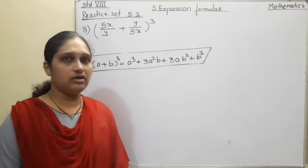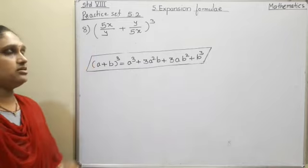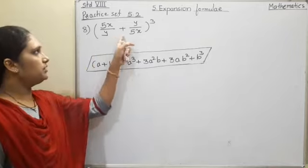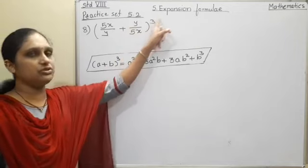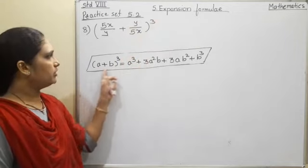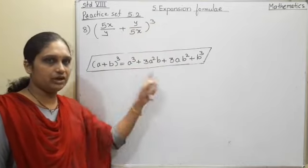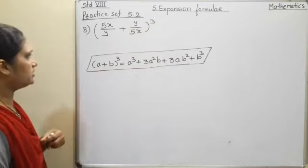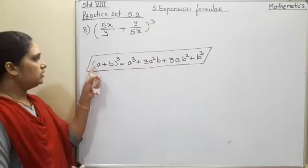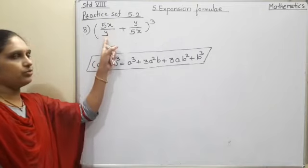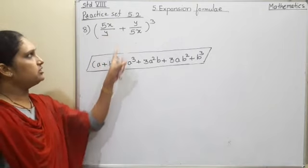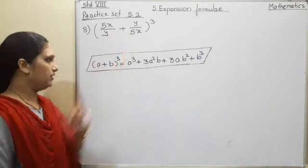Now students, we will take a last sum. Last sum is (5x/y + y/5x)³. We will do the, again the rule is what? We have to write a formula. Formula is written already. Now here a means 5x/y and b means y/5x.